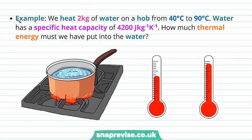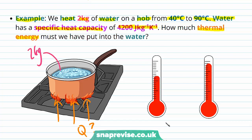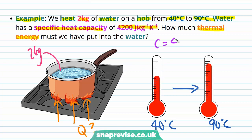Let's do an example. We heat two kilograms of water on a hob from 40 degrees Celsius to 90 degrees Celsius. Water has a specific heat capacity of 4200 joules per kilogram per Kelvin. How much thermal energy must we have put into the water? We know the mass is 2 kilograms, the initial temperature is 40 degrees Celsius, the final temperature is 90 degrees Celsius, and the specific heat capacity is 4200 joules per kilogram per Kelvin.